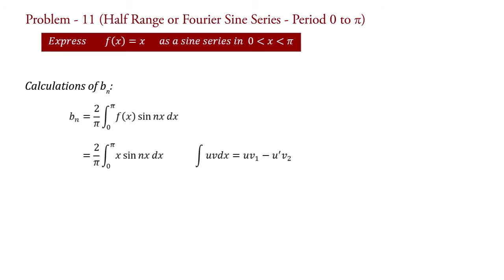By applying this formula, we can write bn equal to 2 upon π. Here u equal to x, so we put here x into v1. That is integration of v, and v equal to sin nx. Therefore, we put here minus cos nx upon n limit 0 to π minus u dash.